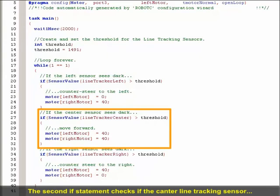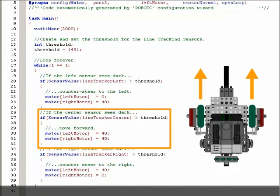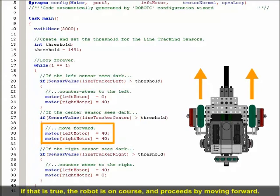The second if statement checks if the center line tracking sensor detects a value greater than the threshold, or the dark line. If that's true, the robot is on course and proceeds by moving forward.